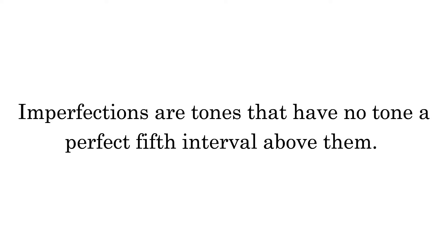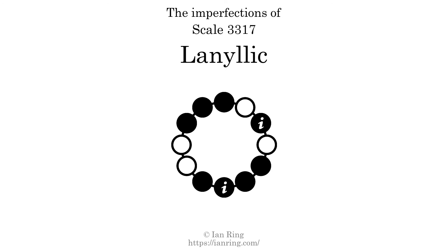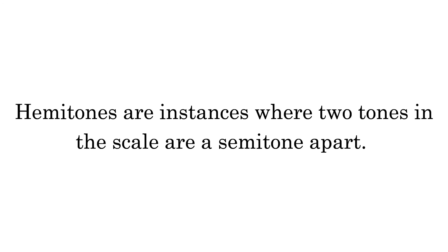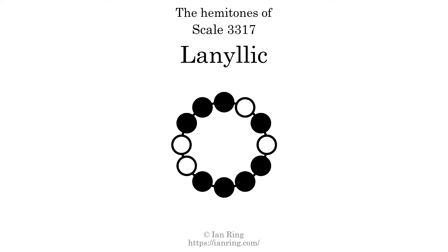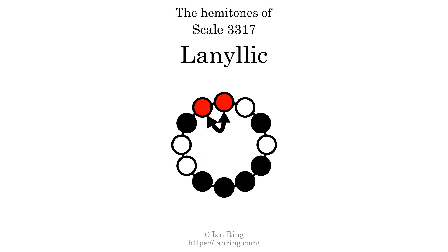Imperfections are tones that have no tone a perfect fifth interval above them. This scale has two imperfections, at two positions shown here. Hammertones are instances where two tones in the scale are a semitone apart. This scale has five hammertones at the positions shown.